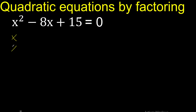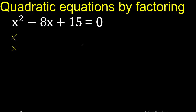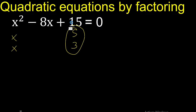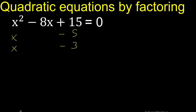x multiplied by x is x squared. We need 2 numbers that multiply to 15: 15 multiplied by 1 is 15, and 5 multiplied by 3 is 15. Let's check the signs — plus plus is plus, and minus minus is plus.